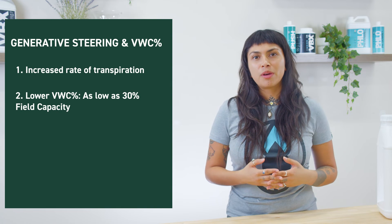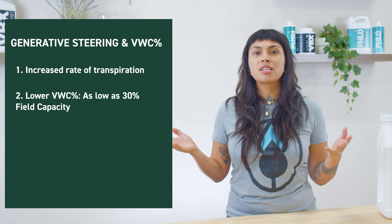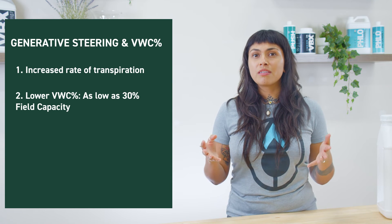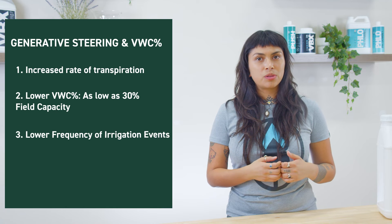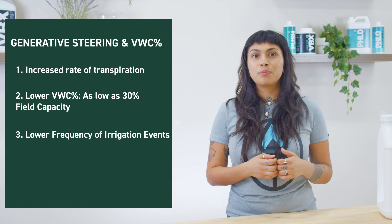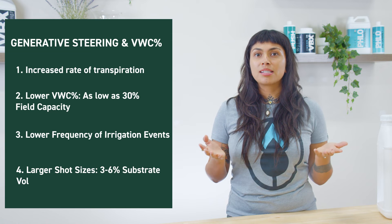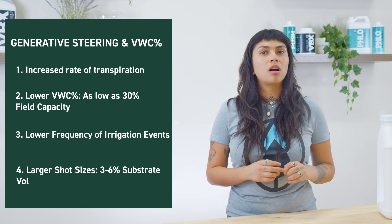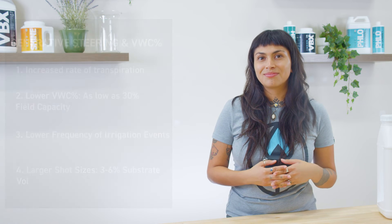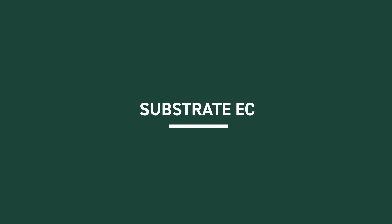We want to allow our volumetric water content to decrease significantly. To achieve these conditions, we'll lower the frequency of our irrigation events but increase the volume of our shot sizes to ensure we don't cause irreparable damage from wilting. In previous episodes, we've discussed electrical conductivity in solutions and understand that to be the concentration at which we mix our nutrients in water. In terms of crop steering, this will be referred to as our feed EC.